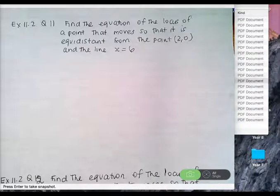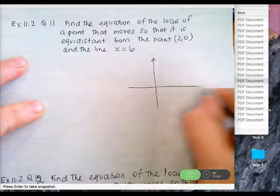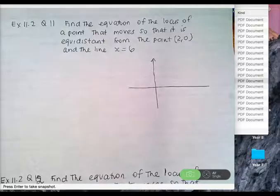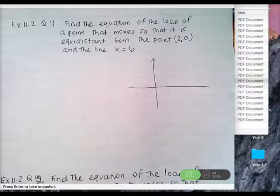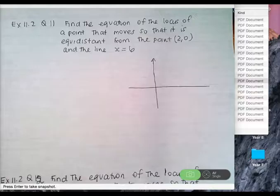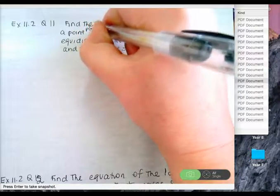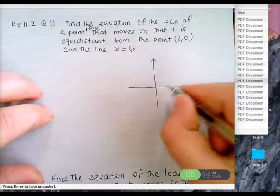This is a parabola. With those earlier ones, you knew that PA was 9, or you knew the distance from one point to your point and another point were equal, so you put PA equals PB. But this one, where it's equidistant from a point and a line, you've got to do a sketch. My point P(X, Y) needs to be halfway between the point (2, 0) and the line x equals 6.